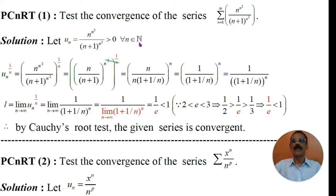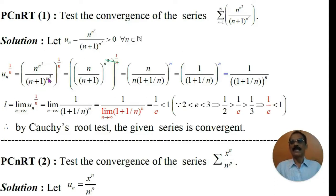What is the nth root of u_n? The nth root of u_n equals n to the power n squared divided by n plus 1 to the power n squared, whole to the power 1 by n. Here the terms within the bracket have n squared as a power in the numerator as well as in the denominator. Therefore, this can be written as n by n plus 1 to the power n squared, whole to the power 1 by n.